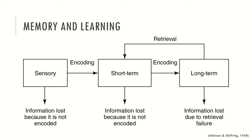Typically, sensory information passes to short-term memory, and from short-term memory, if mental contents are rehearsed, they pass to long-term memory. However, the information must be encoded through these different stages, and if mental contents are rehearsed sufficiently, they typically pass to long-term memory. When we don't encode and we don't rehearse, information tends to be lost. In sensory memory, information is lost because it's not encoded. In short-term memory, information is also lost due to lack of encoding. And if we don't increase encoding during these stages, in long-term memory the information is lost through retrieval failure.